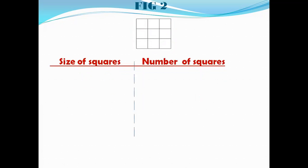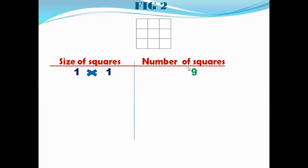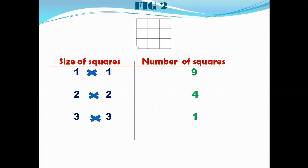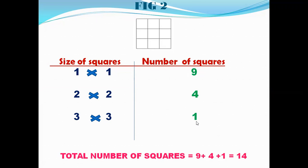Let us move to figure 2. We have a 3×3 grid. First, for 1×1, we can see there are 9 squares — counting 1 through 9. For 2×2, we have 4 sub-squares — counting 1, 2, 3, and 4. In 3×3, we have only 1 square — the full square. So to find the total number of squares, we add 9 plus 4 plus 1, which gives us 14 squares.